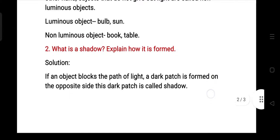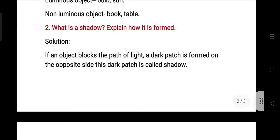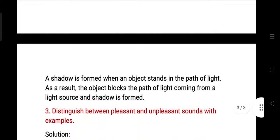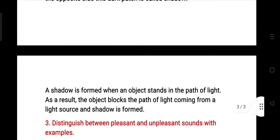What is a shadow? Explain how it is formed. If an object blocks the path of light, a dark patch is formed on the opposite side. This dark patch is called shadow. A shadow is formed when an object stands in the path of light. As a result, the object blocks the path of light coming from a light source and a shadow is formed.